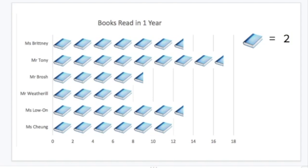If one picture of a book equals two books, then what would half a picture of a book equal? You might have guessed, it would equal one book. So for Mr Brosh it would be 2, 4, 6, 8, and one more. That would be 9.